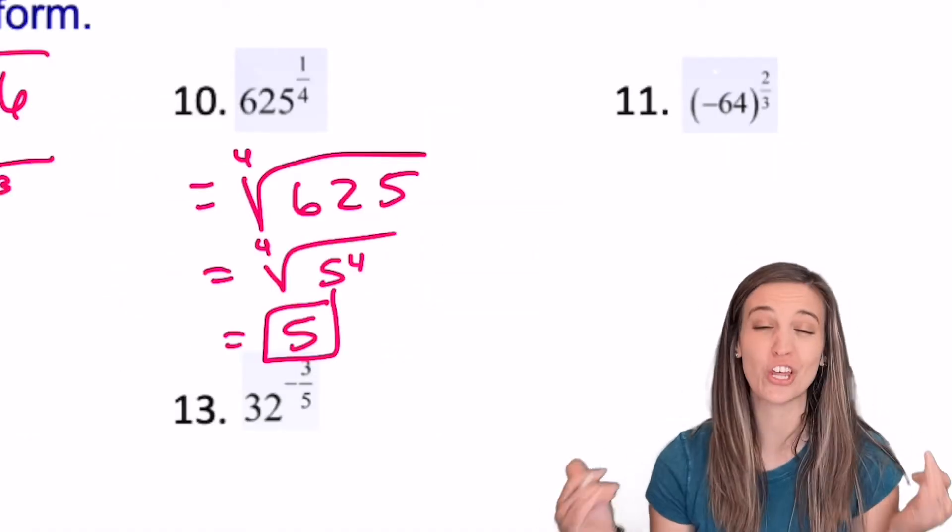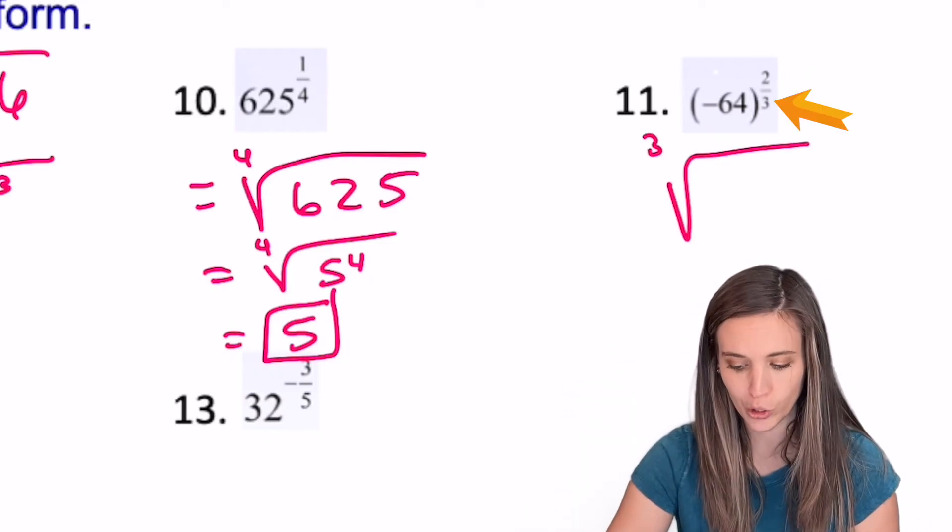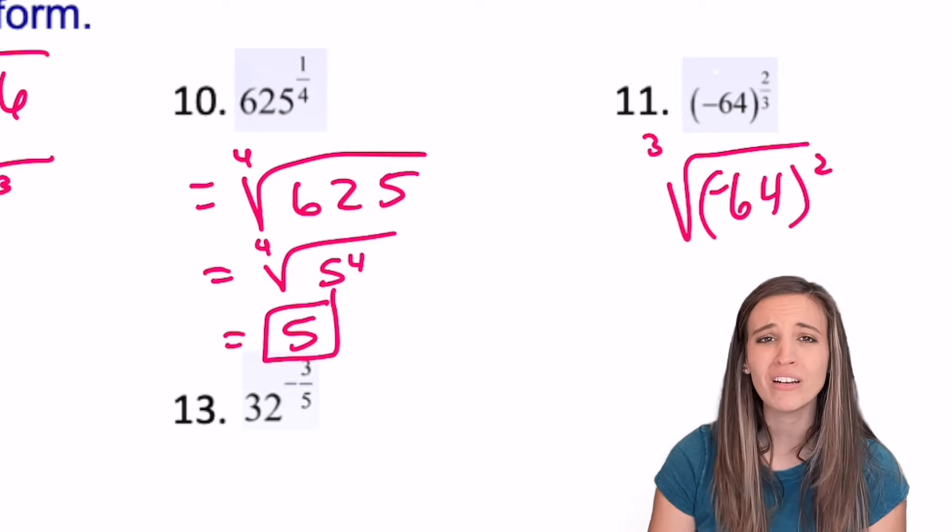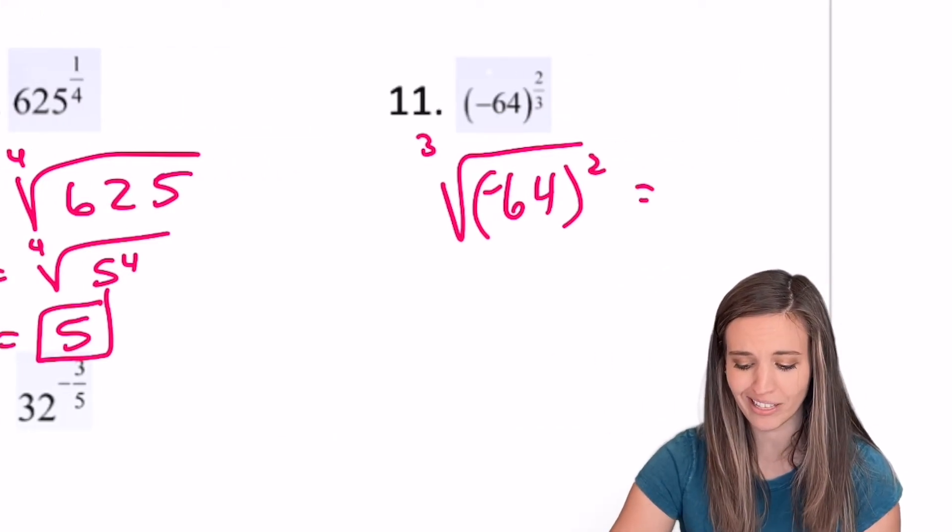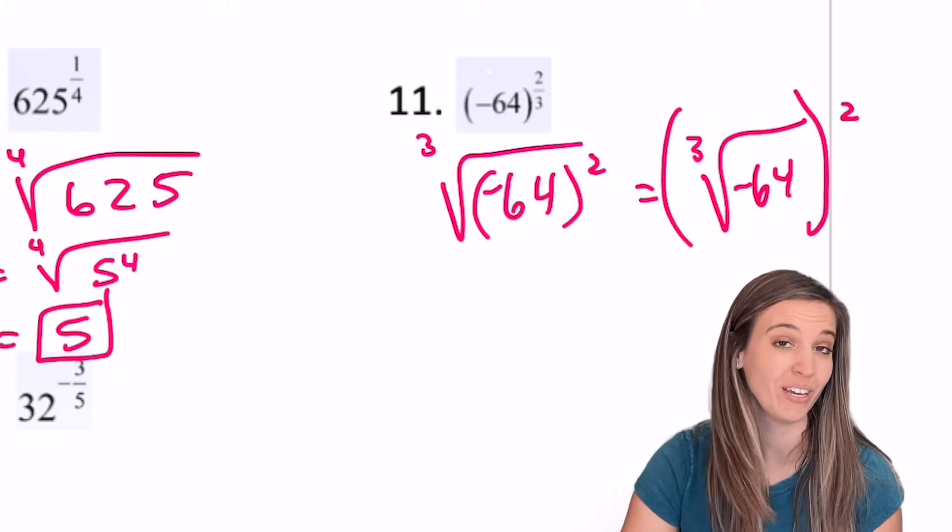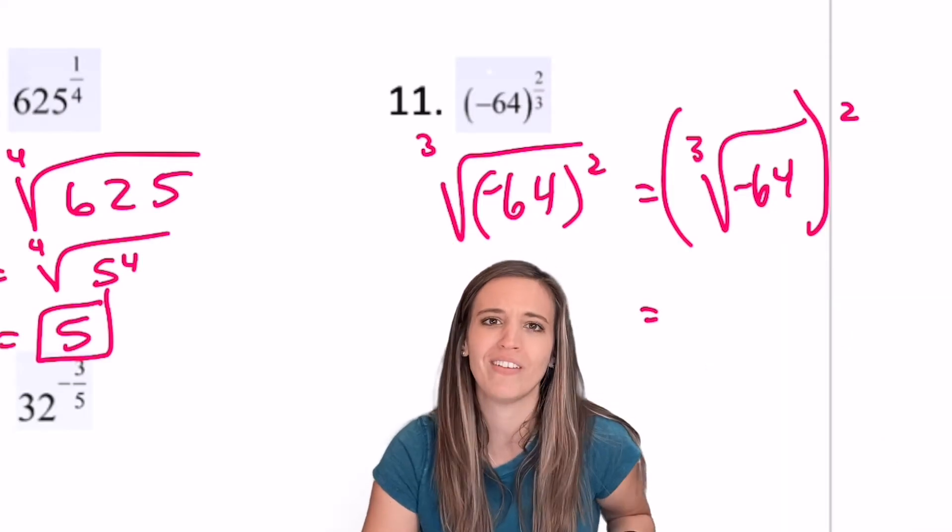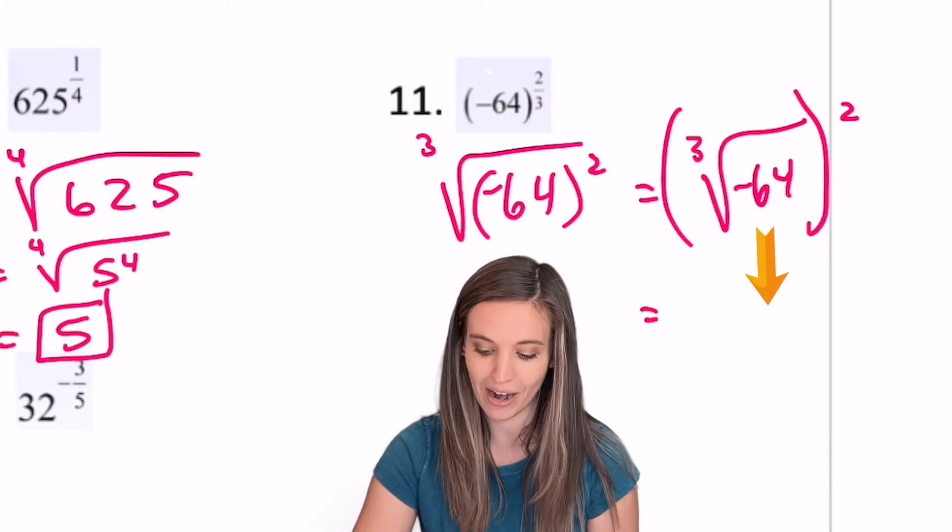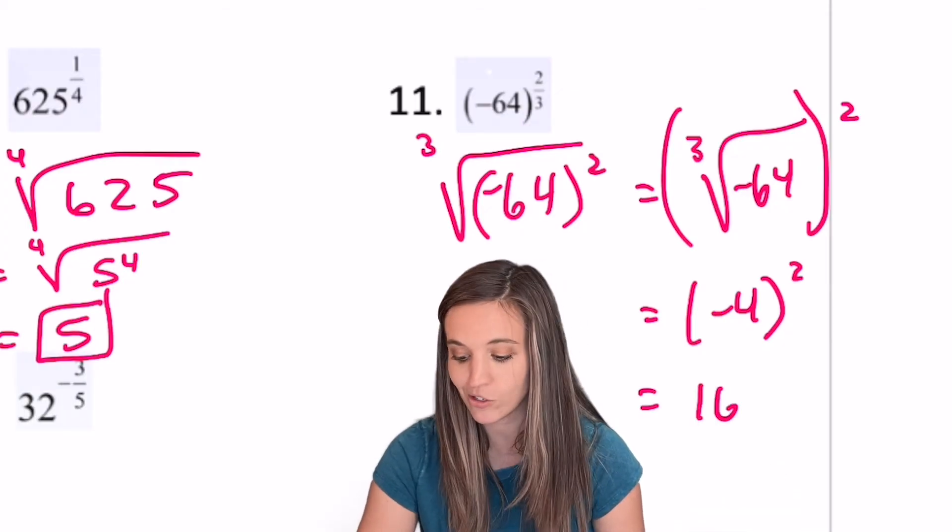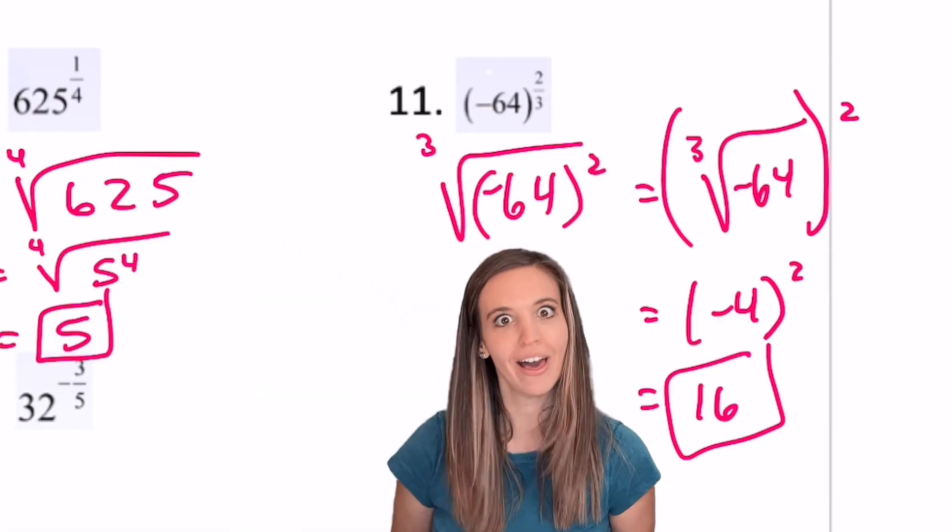11, negative 64 to the 2/3rds. Okay, so power's on top, roots on bottom. So it's going to be the cube root of negative 64 squared. I don't want to do negative 64 squared. So look what I can do. I can write this in an equivalent form. I can do the cube root of negative 64 and then I can say that that's all being squared. So I can put the squared on the outside. That makes my life a lot easier because the cube root of negative 64, well, 4 cubed. So I'm going to have negative 4 squared. That's so nice. Negative 4 squared is just 16. No problem. So if it's easier to write that exponent, the power on the outside, do that.